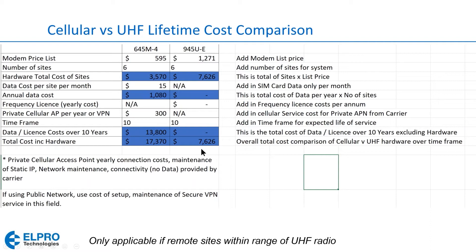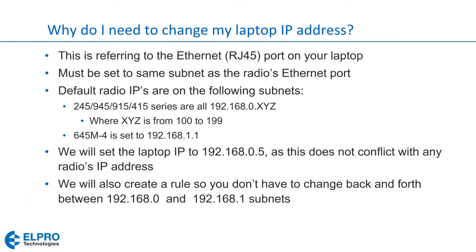Keep in mind that just as we thought 3G service would be around forever, carriers are gradually discontinuing 3G service, especially as 5G comes out. A given level of service like 3G or 4G may have a 10-year lifespan before it's phased out by the carrier. That's something to factor in — how long will the carrier maintain that service. Of course, in lots of cases there won't be any choice; cellular is the only practical option. So that's what we're going to talk about today: how we set up our cellular modems.